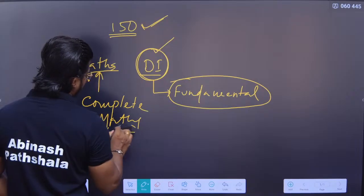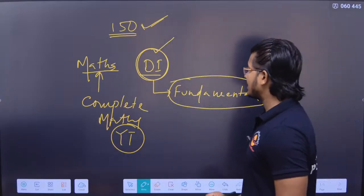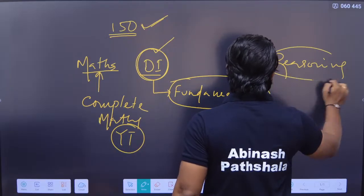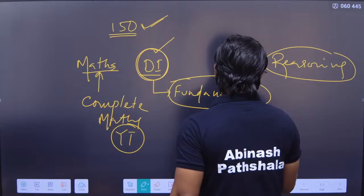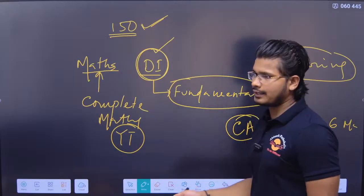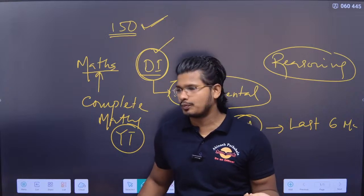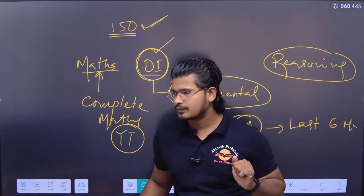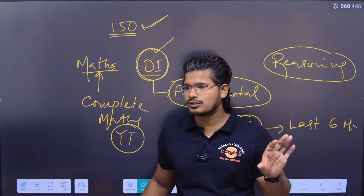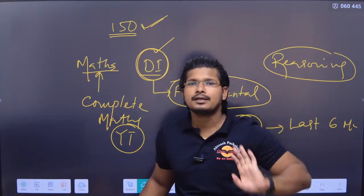Follow the math batch on YouTube. For strategy: reasoning, reasoning, current affairs — last six months. Exam current affairs from around February-March 2015 onwards should be covered.